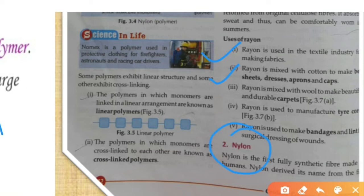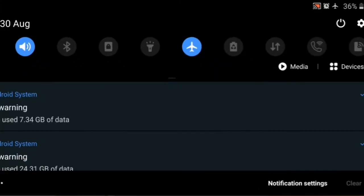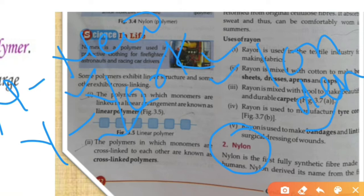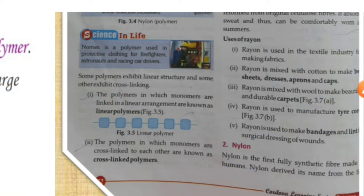The second important fiber is nylon. Why is it called nylon? NY stands for New York and LON stands for London. It was first introduced in New York and London, so its name became nylon. Nylon is the first fully man-made synthetic fiber.